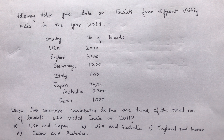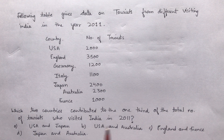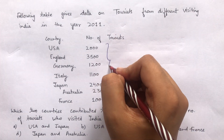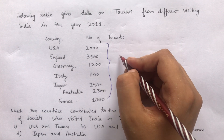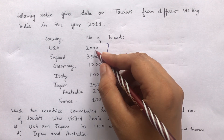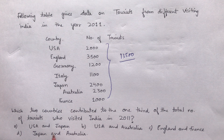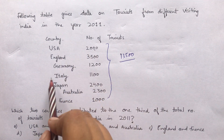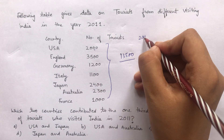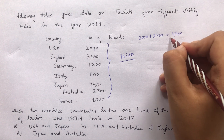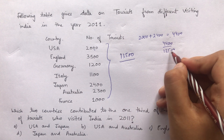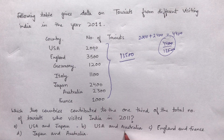Next question: the following table gives data on tourists from different countries visiting India in 2011. You have to find which two countries contributed to one third of the total number of tourists who visited India in 2011. We sum the total. Let's check USA and Japan: USA is 2000, Japan is 2400, so 2000 + 2400 = 4400. Then 4400 upon 13500 — this does not give 1/3, so USA and Japan are not the answer.